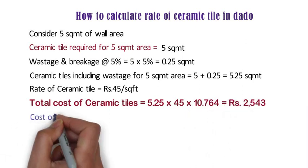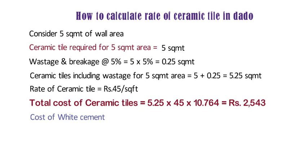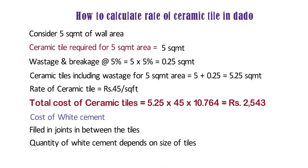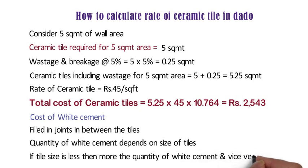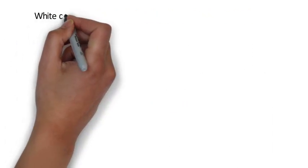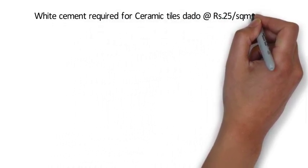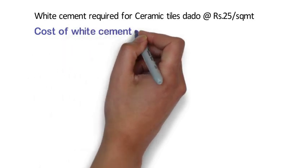Now we have to derive the cost of white cement. White cement is filled in joints between the tiles. The quantity of white cement depends on the size of tiles — if tile size is less, then more white cement is required, and vice versa. White cement cost is very less so we will not go into detailed calculation. In case of dado, the joint width shall be less to avoid seepage of water. Generally, white cement required for ceramic tiles dado is at the rate of 25 rupees per square meter. So 5 x 25 = 125 rupees.